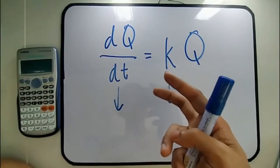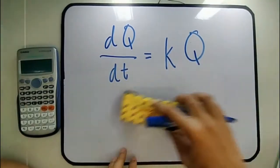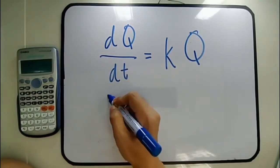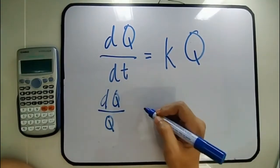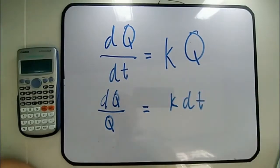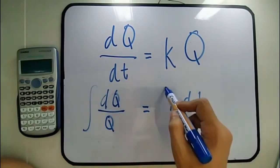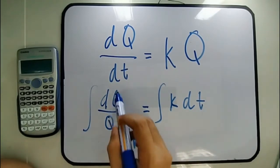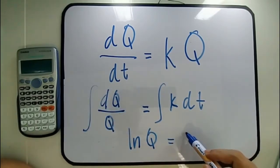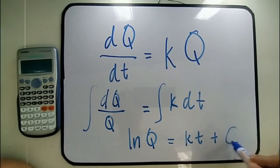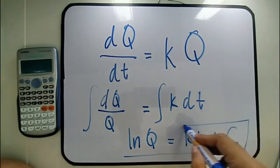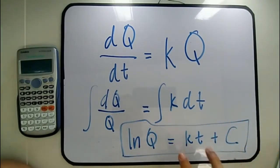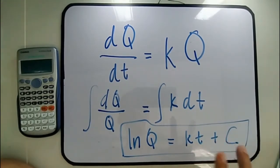Let's derive the general equation. Separating variables, we have dQ/Q equals K dT. Integrating both sides, we get ln Q equals KT plus C. This is our general solution, and our solution for this application of differential equations will be based on this.